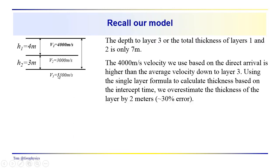So we get a little over 9 meters when we actually only have 2 meters. The 4,000 meter per second velocity is higher than the average velocity. It completely ignores the fact that there is a lower velocity layer in there. And using the single-layer formula, we get an estimate of 9 meters, 9.03 meters. So we overestimate the thickness of the layer by 2 meters. That's about a 30 percent error.